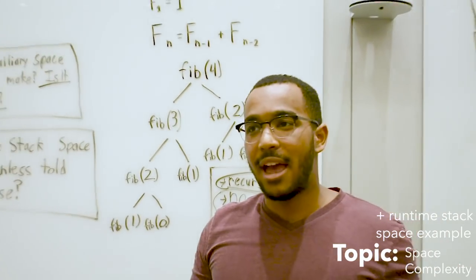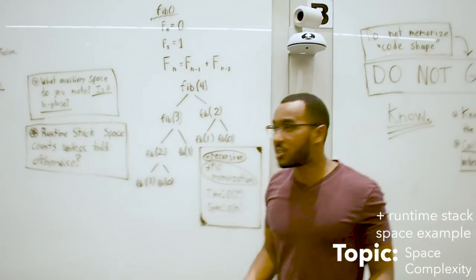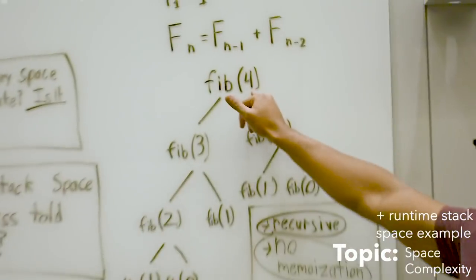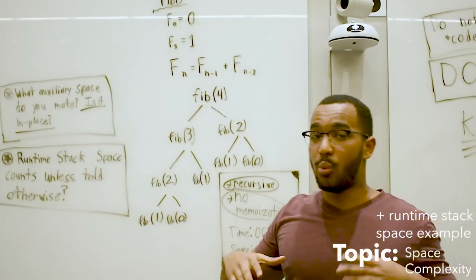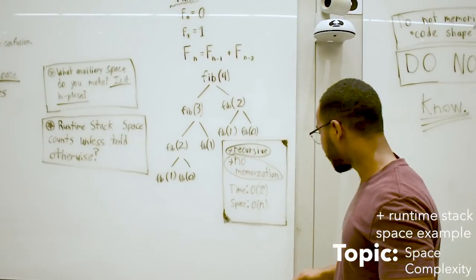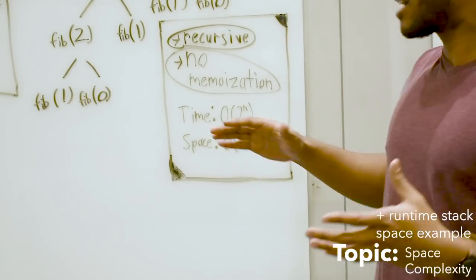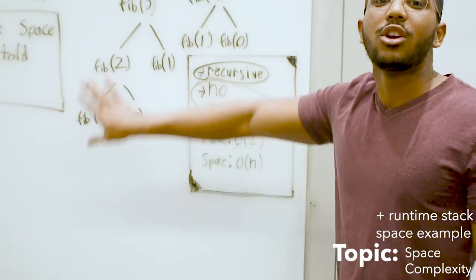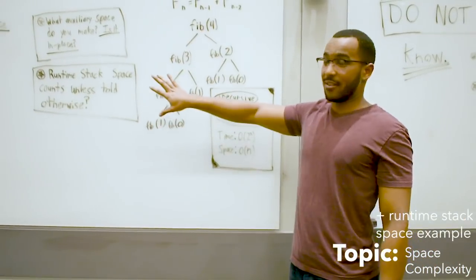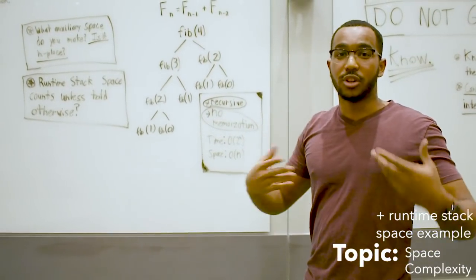Four looks familiar. Where do we see four? We see four is the input. Our input n is four. So what does our space complexity become? We see that our space complexity becomes O of n. It becomes linear because at max, we're going to have n calls on the call stack for this recursion.